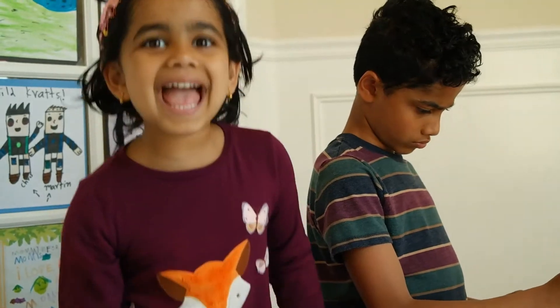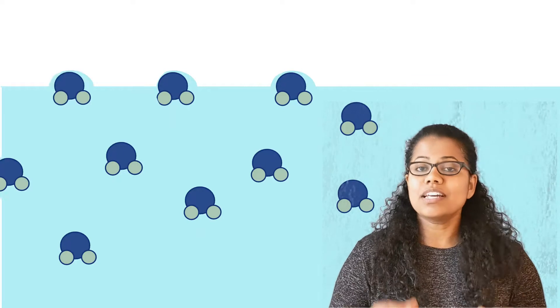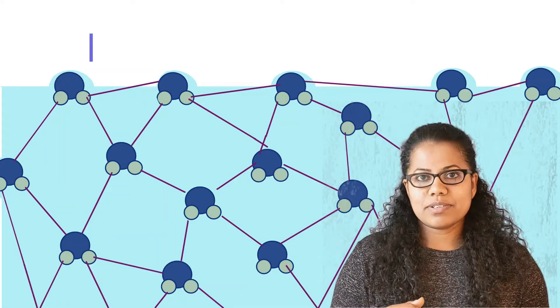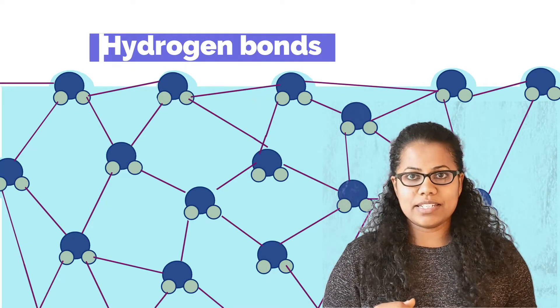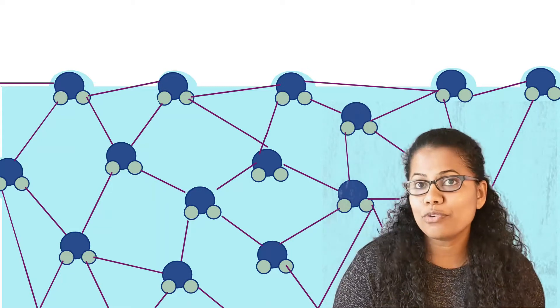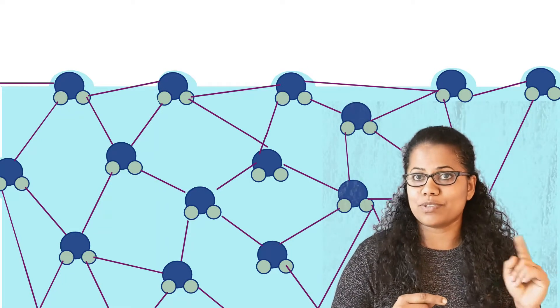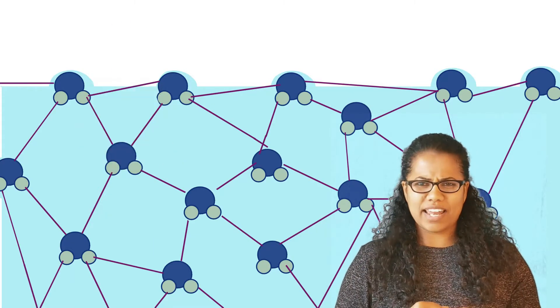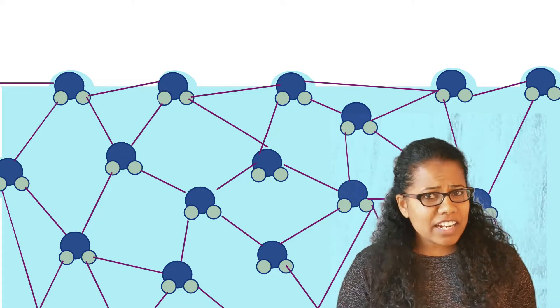We'll explain surface tension using some animations. Surface tension is a property of liquids, and water has high surface tension. Water molecules love other water molecules — each water molecule always tries to make friends with other molecules through hydrogen bonds. Molecules inside the water have lots of friends, more compared to the molecules on the surface, which have air around them.